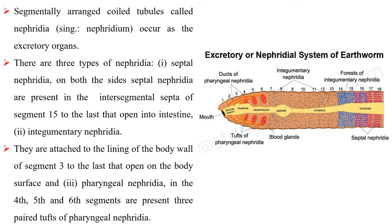There are three types of nephridia. Septal nephridia are present on both sides of the intersegmental septa from the 15th segment to the last, and open into the intestine. Integumentary nephridia are attached to the lining of the body wall of segment 3 to the last and open on the body surface. Pharyngeal nephridia: in the 4th, 5th and 6th segments are present three pairs of tufts of pharyngeal nephridia.